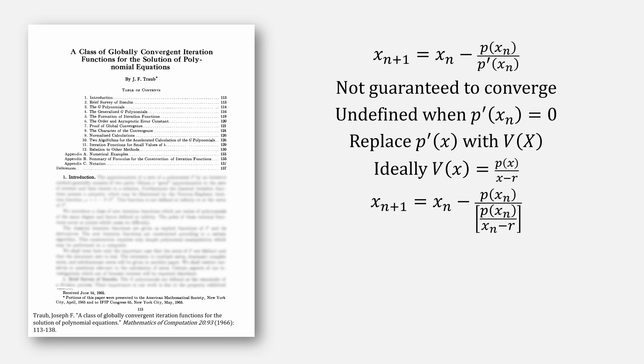So he instead replaces the derivative of the polynomial with some other function v, where, ideally, v is the polynomial divided by x minus the root. Why? Well, if you did plug that into our Newton's method equation and simplify, this means our next value for our x is our root, hence we found the answer.